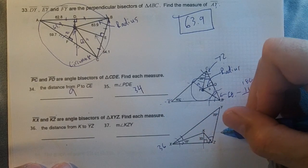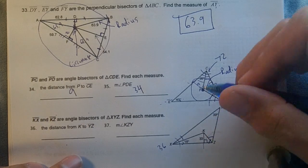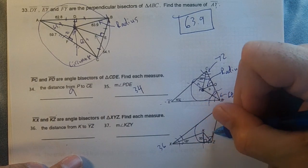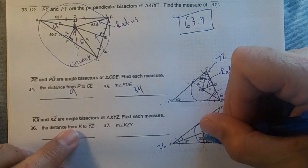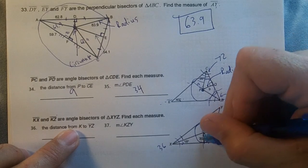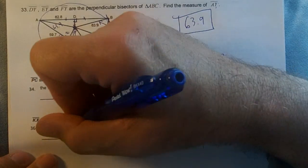This whole angle would be... they don't give us here. But this right here is going to be our radius. This would be an incenter, right? This is our radius. The distance from K to YZ, which is here, would be 33. It's going to be that radius.